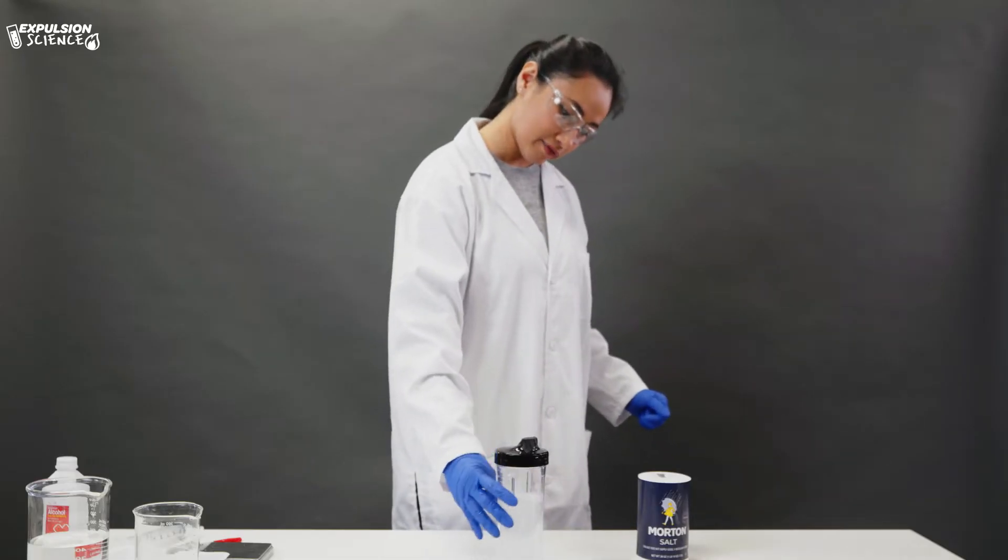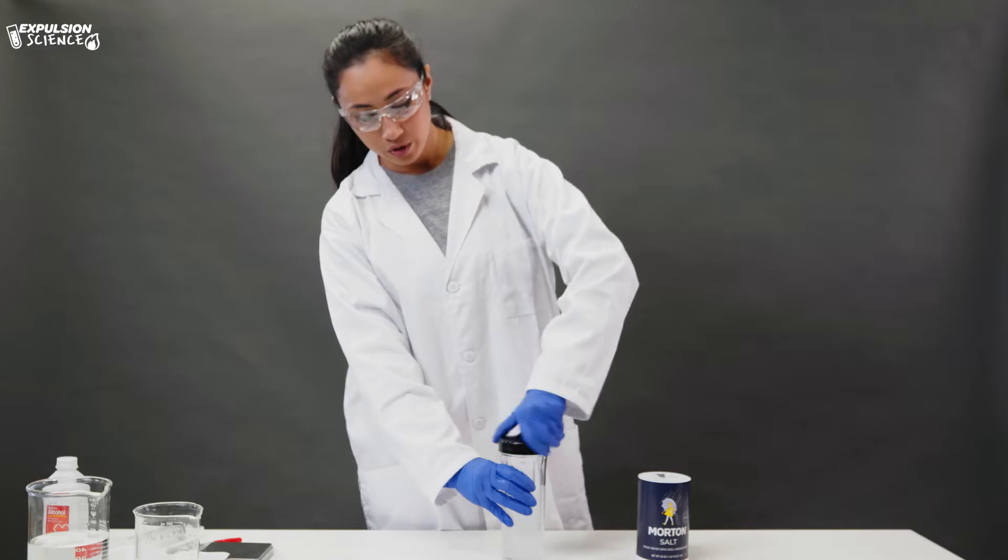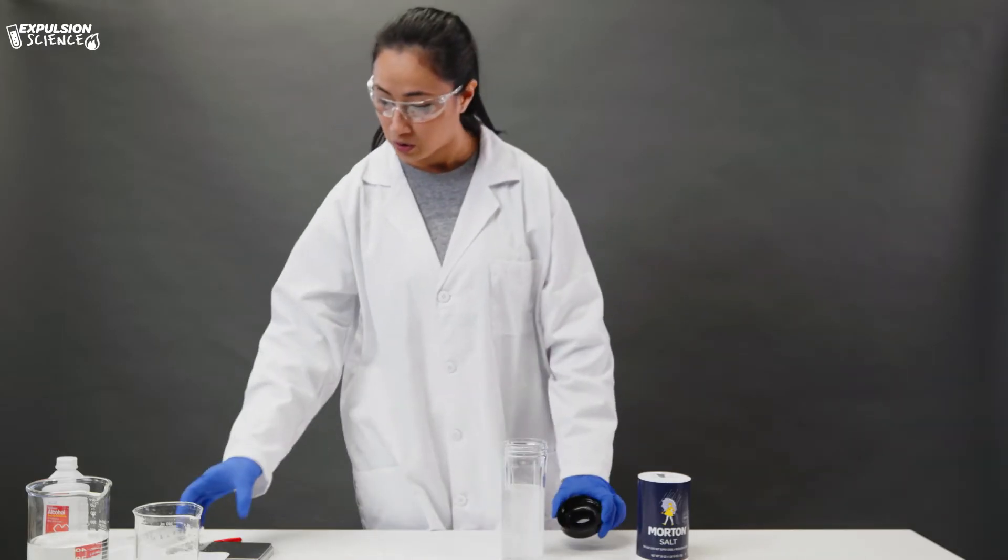So notice how when you look at it visually you actually cannot see where your alcohol is and where your water is. They have just mixed into this uniform composition. So in order for us to allow them to separate, we are going to add our salt.